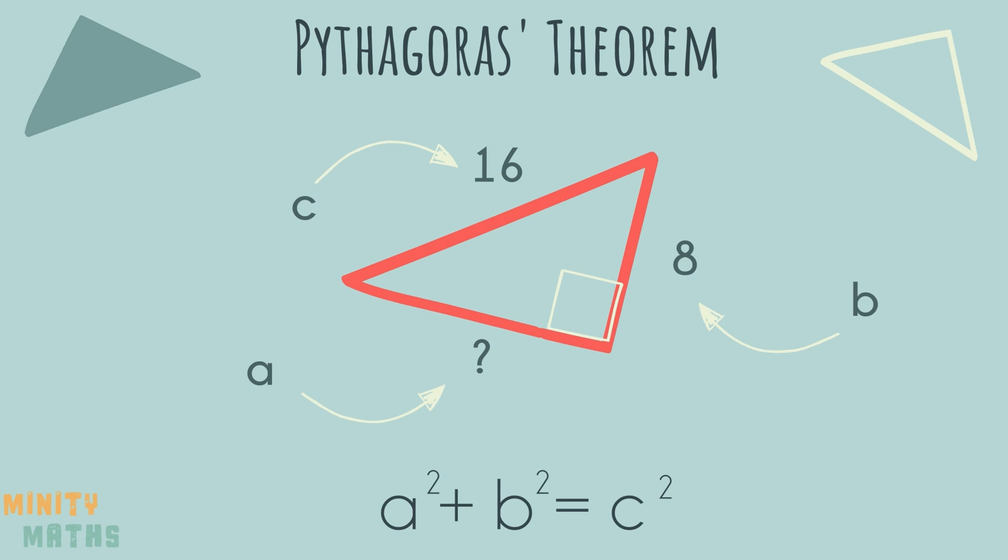So, in this instance, we change b and c in the formula to the relevant numbers, leaving the length of side a for us to find.